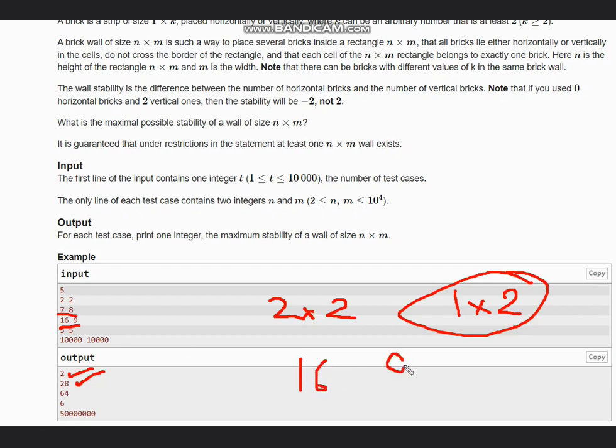For 16×9, again if we take 1×2, we can have max 4 horizontal bricks in one row, and we have 16 such rows. So 4×16 which gives us 64.